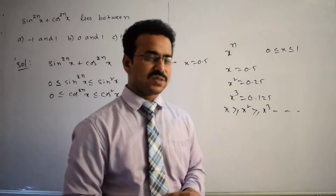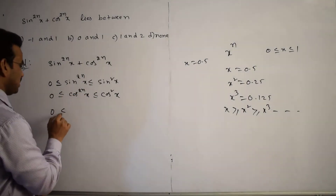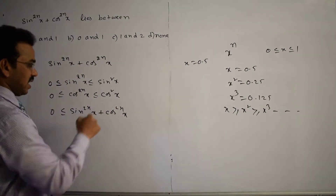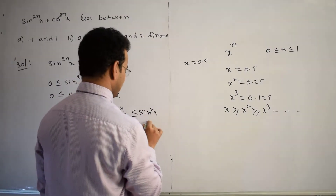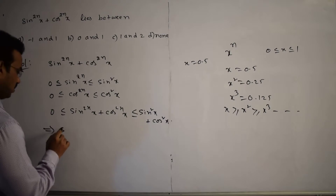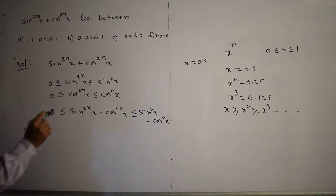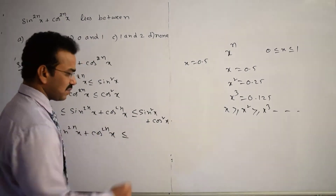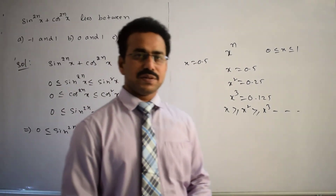Adding the two inequalities: 0 + 0 ≤ sin²ⁿx + cos²ⁿx ≤ sin²x + cos²x. This gives us: 0 ≤ sin²ⁿx + cos²ⁿx ≤ sin²x + cos²x, which equals 1 by the Pythagorean identity.